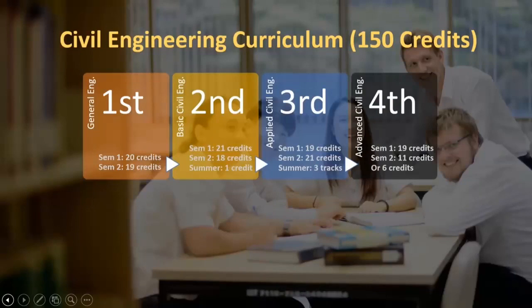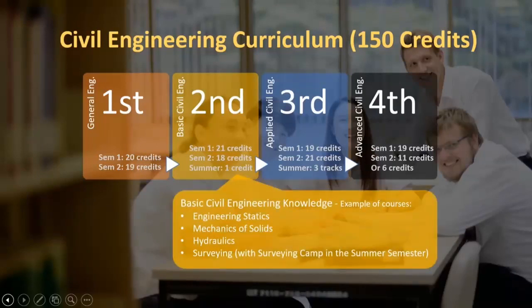Let me talk about the civil engineering curriculum. This is a four-year curriculum. Students start in the first year, and when they enter the second year, they receive basic engineering knowledge. For example, engineering statics — analyzing stability of structures and force systems — mechanics of solids in the second semester, as well as hydraulics and surveying. The surveying course includes a surveying camp in the summer semester, which is an important subject for the basis of civil engineering.